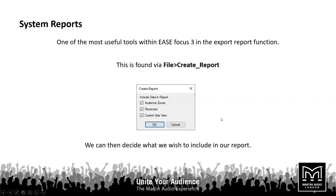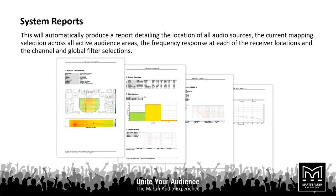Ease Focus will produce a complete report for you — you can select what data you want in that report and print out a report to give to your customer. You can also individually select to export certain data — for example, frequency response graphs, statistical data, side views, or top views — as individual maps or pictures to integrate into your own presentations on your own letterheads. There's a whole bunch of information you can glean from Ease Focus to help you design your systems and give a nice presentation package to your customers.